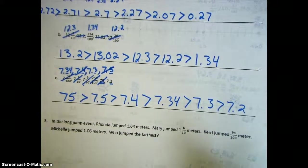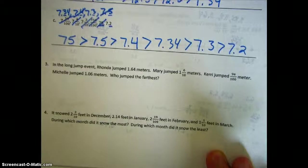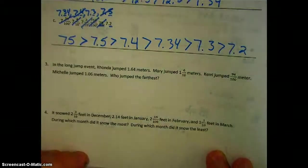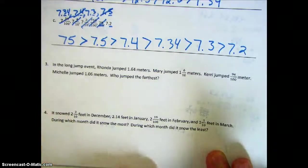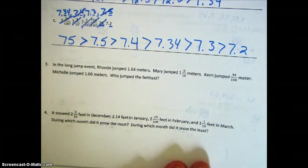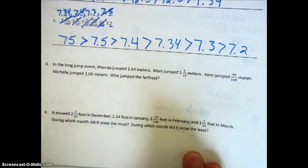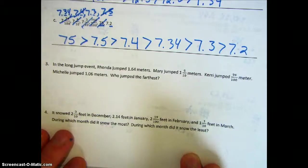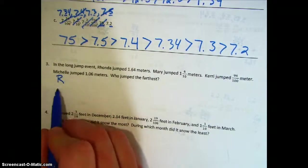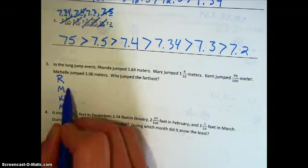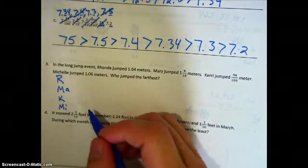Now we're going to conclude with two word problems. Number three: in the long jump event, Rhonda jumped one and sixty-four hundredths meters, Mary jumped one and six-tenths meters, Carrie jumped ninety-four hundredths of a meter, and Michelle jumped one and six-hundredths of a meter. Who jumped the farthest? This is set up the same as before — let's make them all decimals so they're easier to compare.